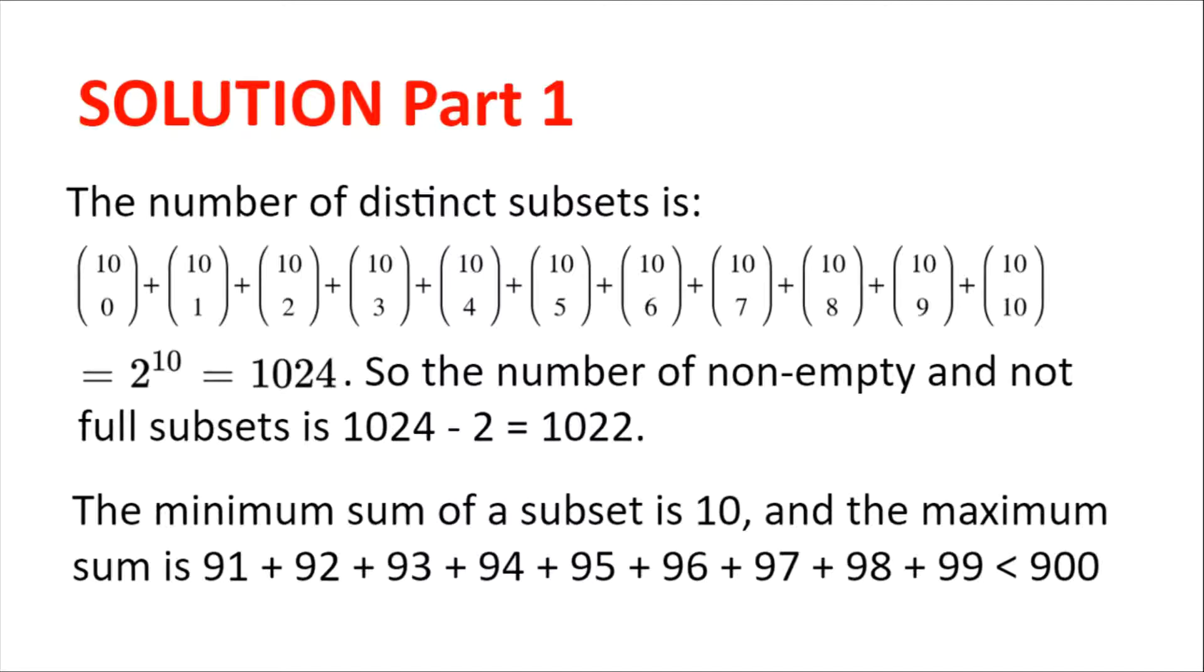Now, the minimum sum of a subset is 10, when we have one number and the smallest number is 10, while the maximum sum is 91 plus 92 plus 93, all the way to plus 98 plus 99, which is less than 9 times 100, which is 900.